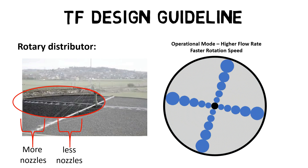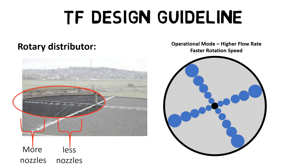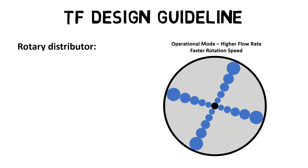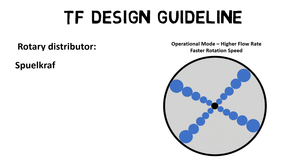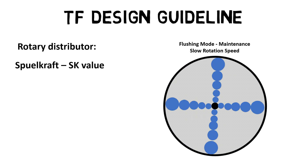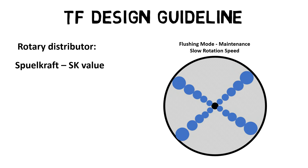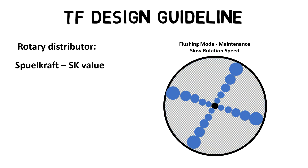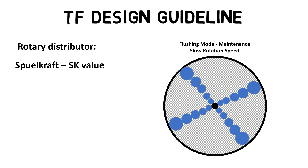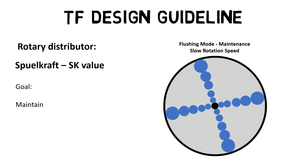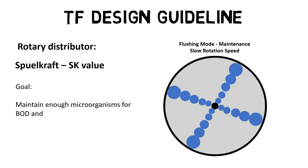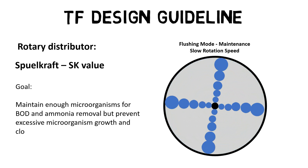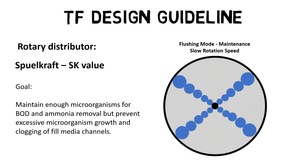The amount of water trickled above a certain plastic-fill media area per minute influences the flushing effect, also known as the Spülkraft or SK value. The higher the SK value, the thinner the layer of microorganisms attached to the plastic-fill media surface. The goal is to maintain enough microorganisms for BOD and ammonia removal, but to prevent excessive microorganism growth and clogging of fill media channels.